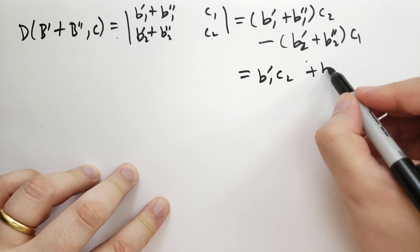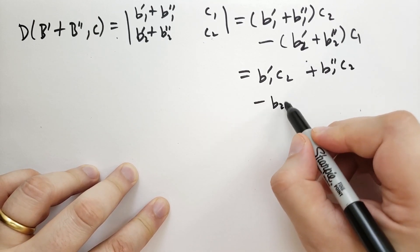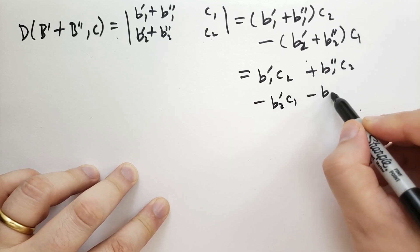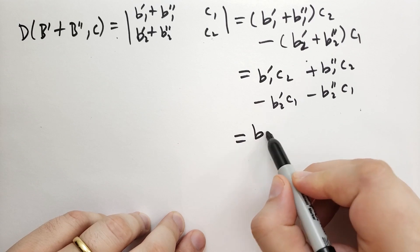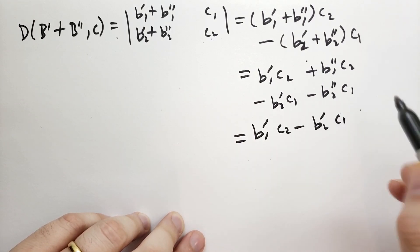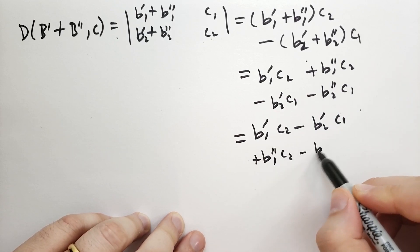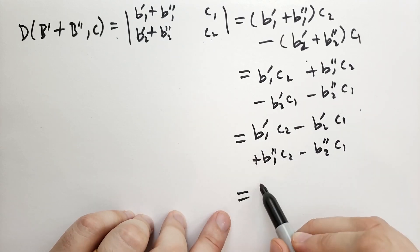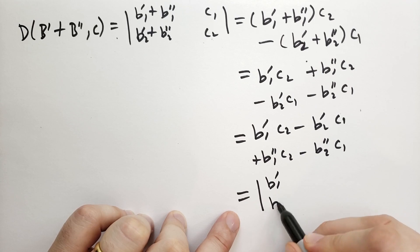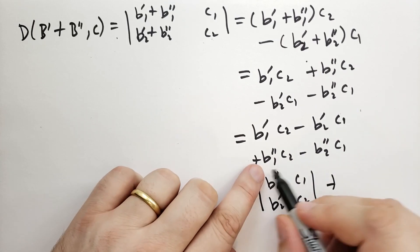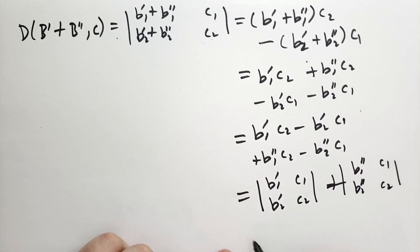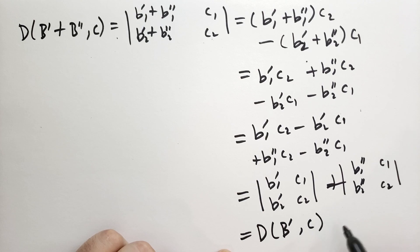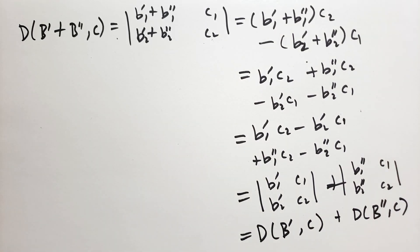How would we go about proving this? Well, in the book, he just does the math. It's pretty straightforward. Let's actually do that. Let's exercise algebra while we still get the chance before we jump into calculus and more advanced mathematics. So we have D of B' plus B'' and C is equal to the determinant of B1' plus B1'' and B2' plus B2'' and C1 and C2. So let's multiply that out. So we get B1' plus B1'' times C2 minus B2' plus B2'' times C1. So we took this guy, multiplied by that, and subtracted those two, multiplied together. Let's go ahead and distribute those terms. So we get B1'C2 plus B1''C2 minus B2'C1 minus B2''C1. And this first one is just the determinant of B'C and this second line here is the determinant of B''C.